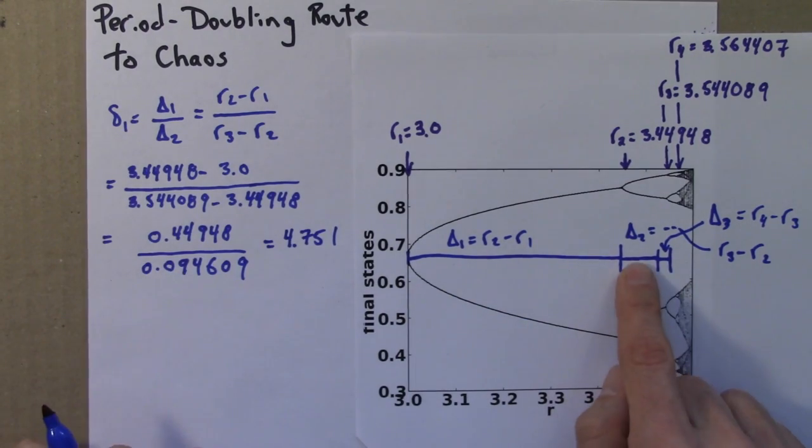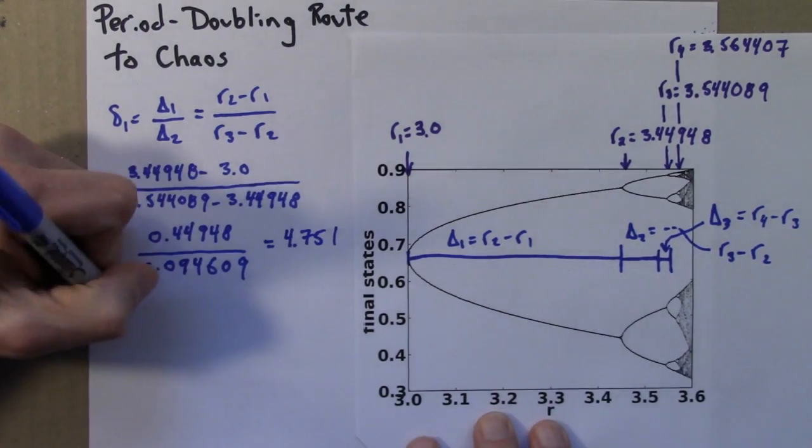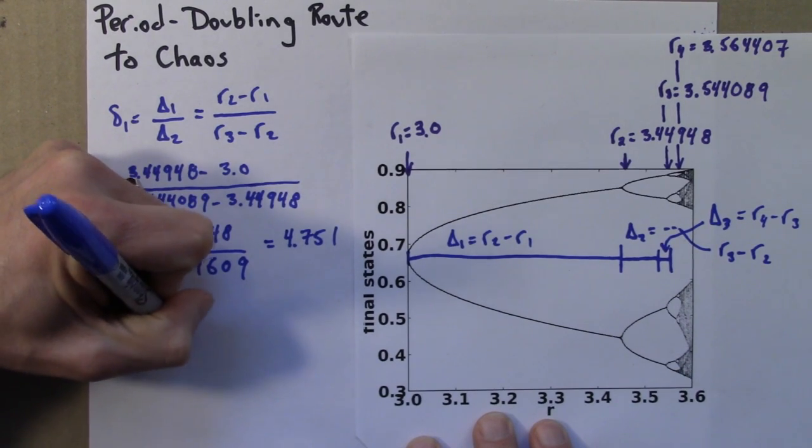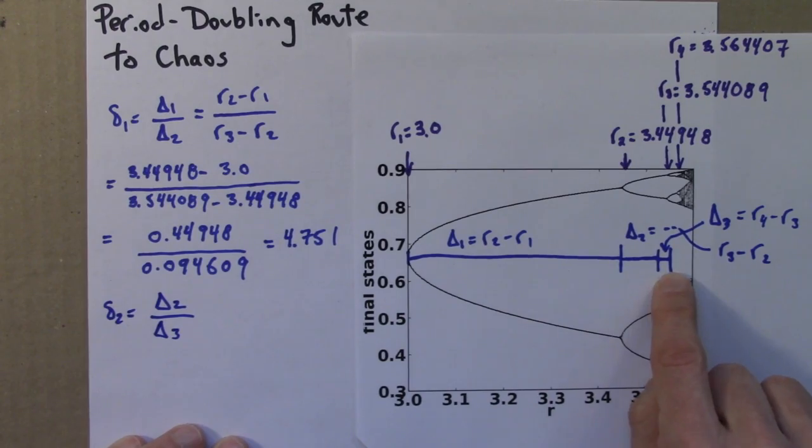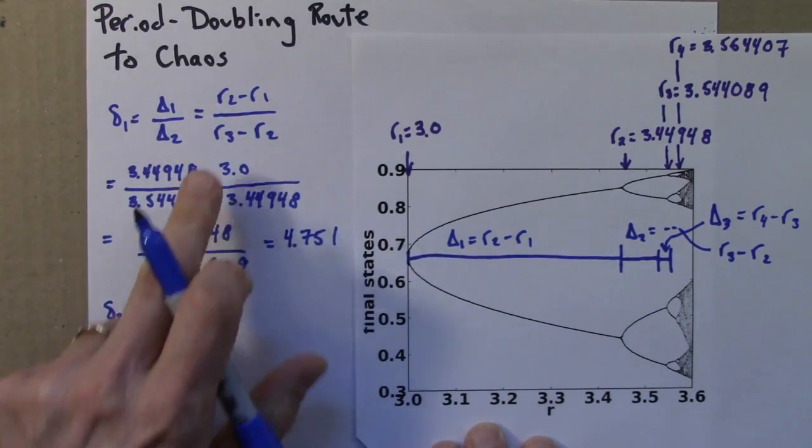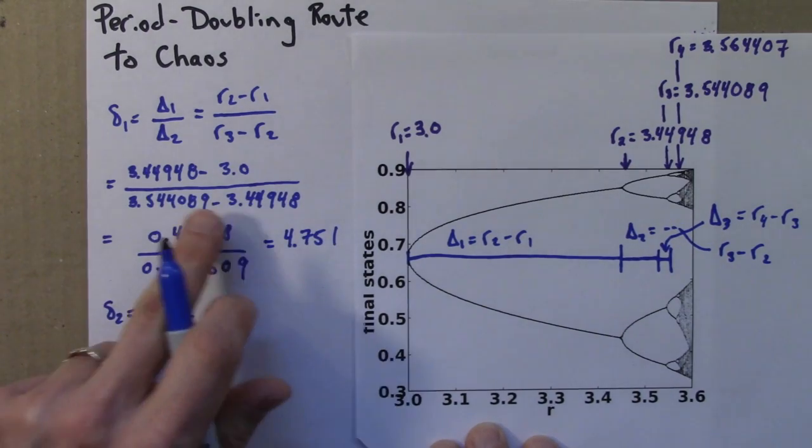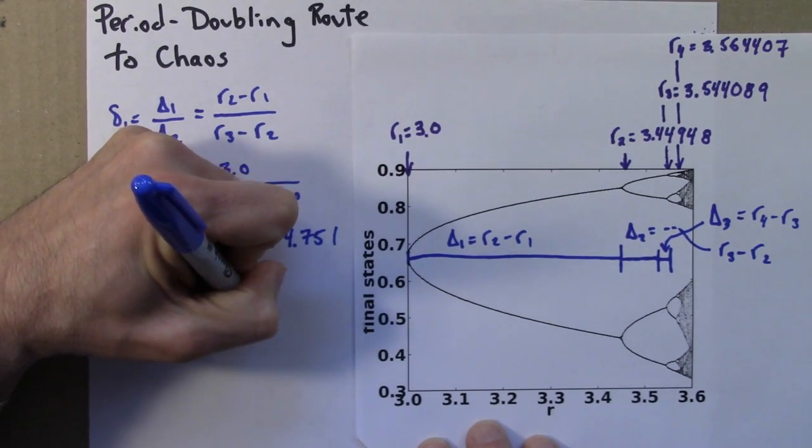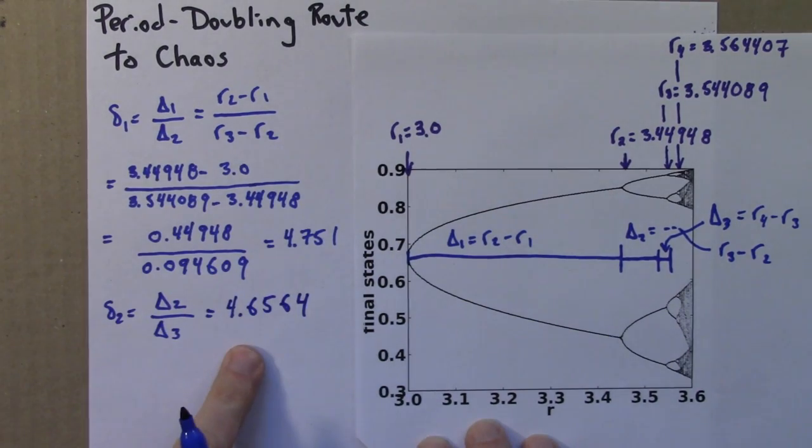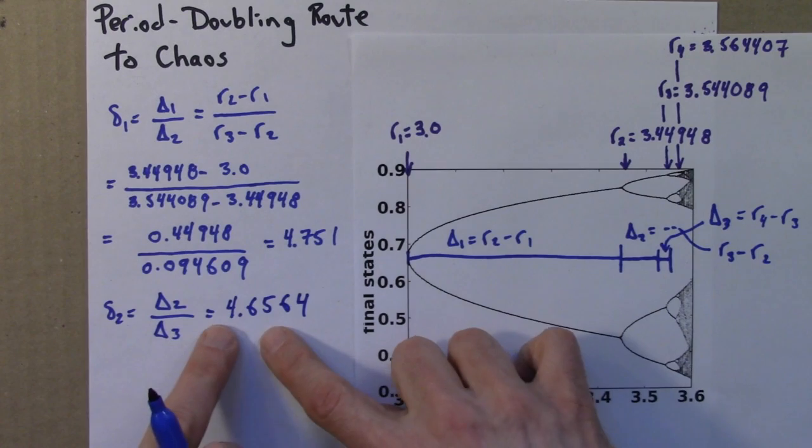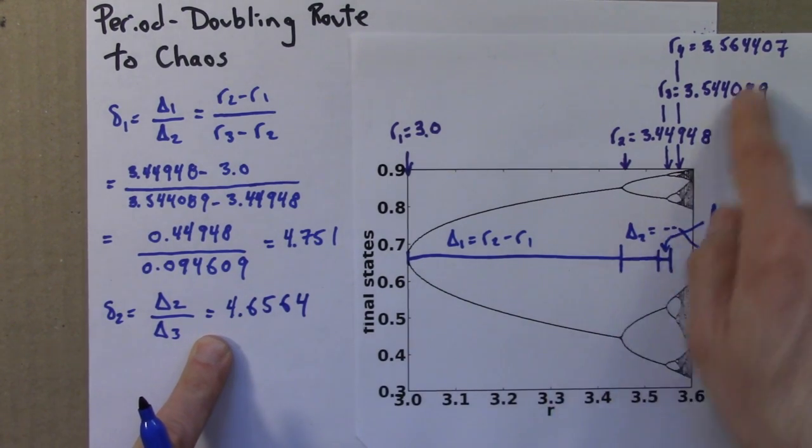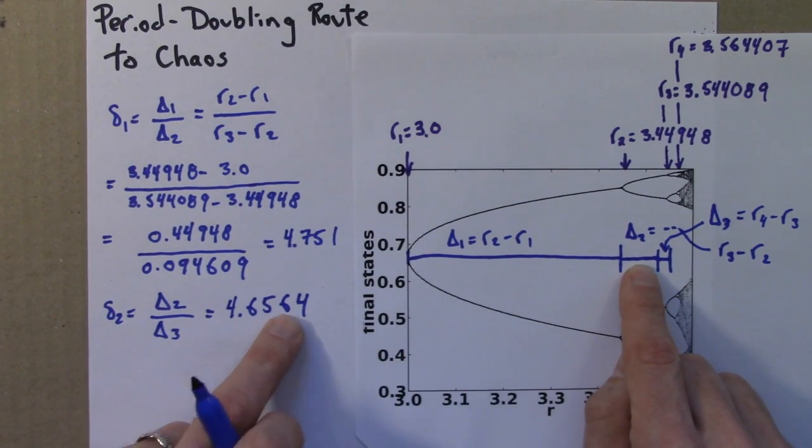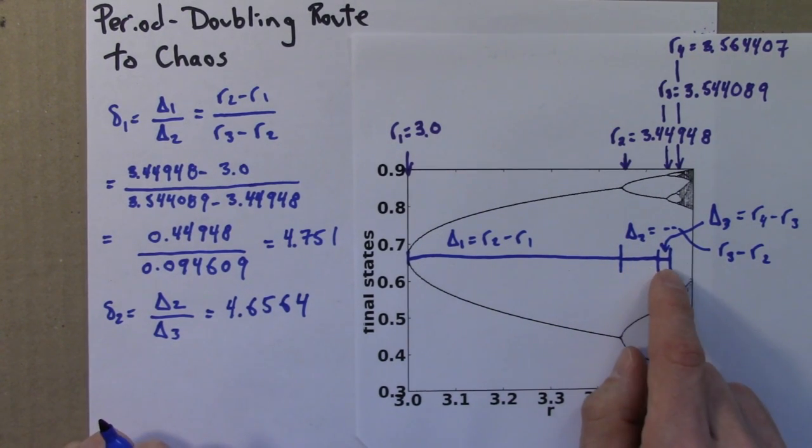We can do a similar thing now comparing this length to that length. Delta 2 is just capital delta 2 over delta 3. It's this length divided by that smaller length. And I can define that in terms of r's, carry out all this stuff. There's no point in redoing all this subtraction. If I do that, I get the number 4.6564. So I've skipped a lot of intermediate steps here that you can just do in a calculator reading off these numbers. And what this means is that this length is about 4.66 times larger than this length.